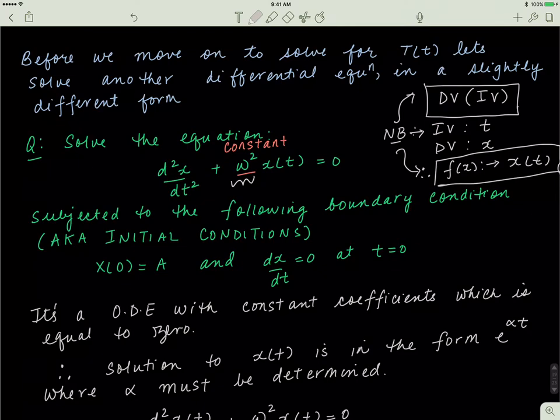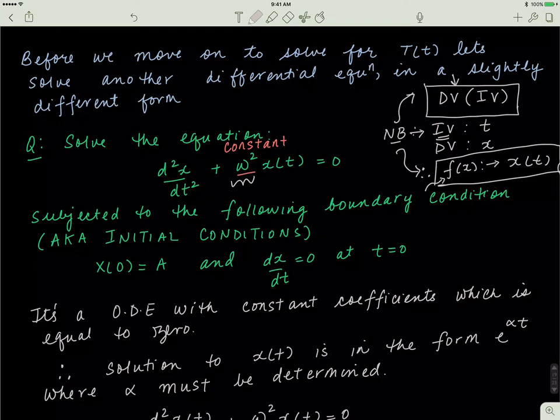The independent variable here is t and the dependent variable is x. So the value of x depends on the value of t — as time goes on, the value of x changes. Whenever we write independent and dependent variables, the dependent variable is outside the bracket and the independent variable is inside. So here we have x as a function of t, whereas we're more used to seeing f as a function of x.